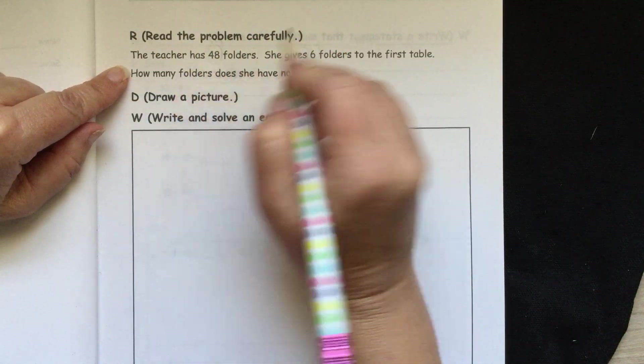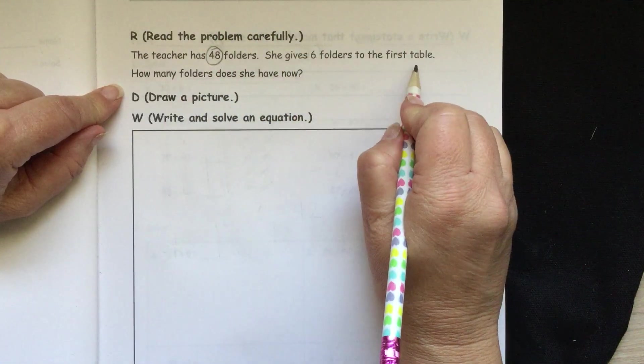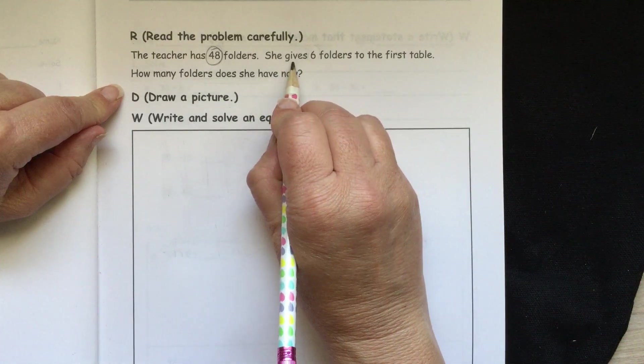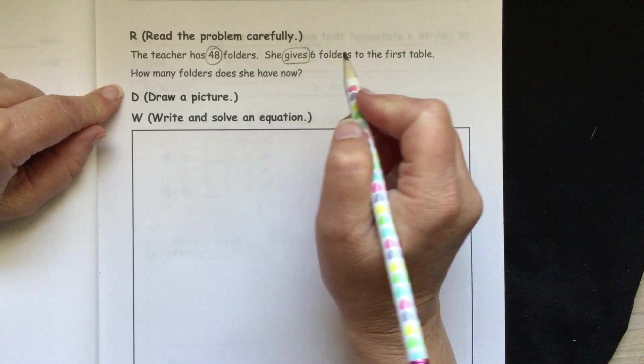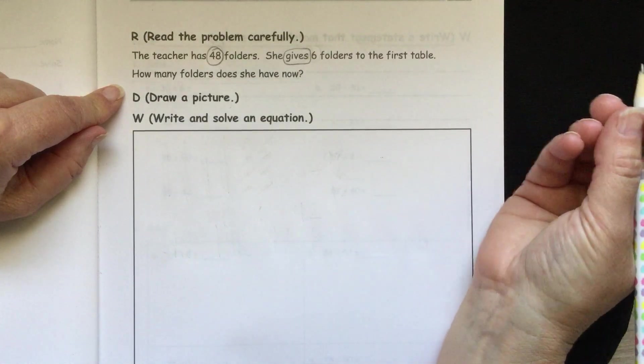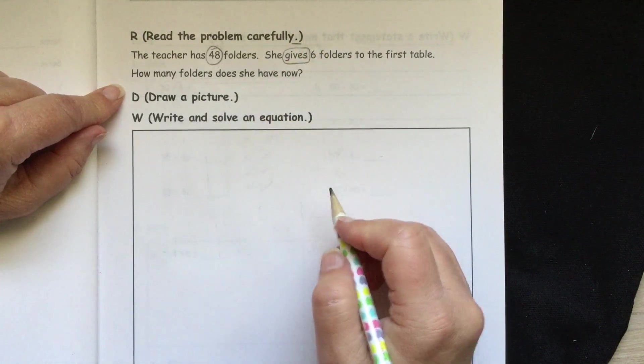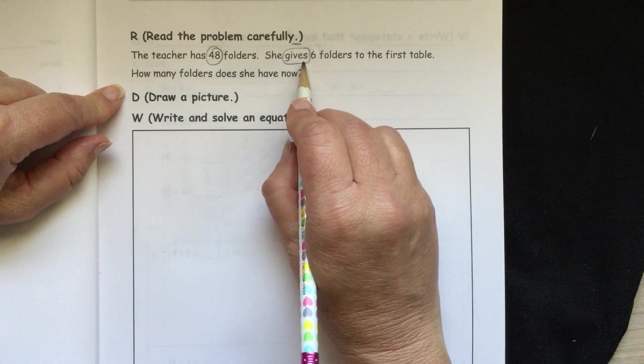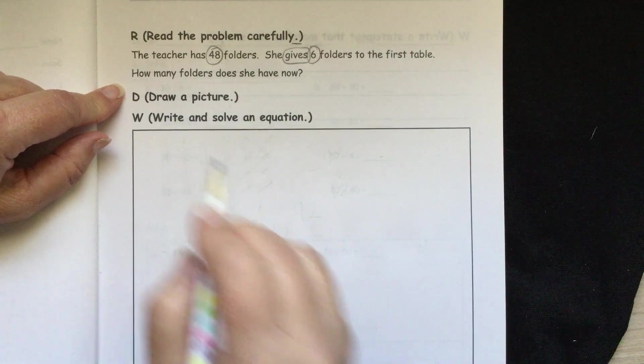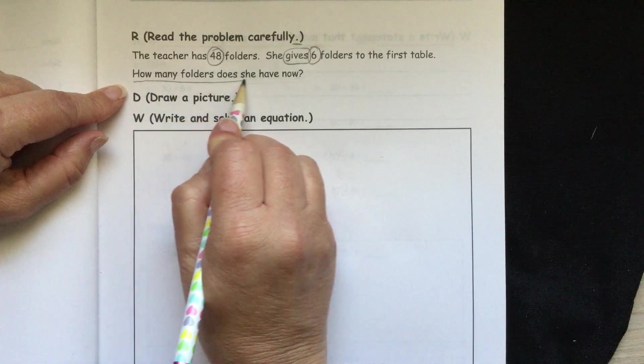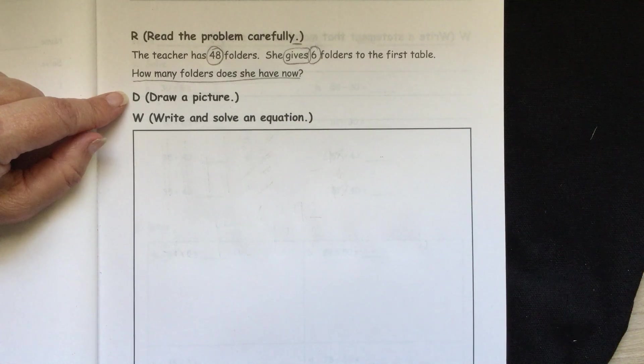The most important things that we need to remember as we're figuring this out. So the teacher has 48 folders. So let's circle 48. She gives 6 folders to the first table. If you're giving something away, it means you're going to have fewer of what you had to begin with. So that means we're going to subtract. So let's put a minus sign there. She's giving 6 folders. Then our question is, how many folders does she have now? Underline that to make sure we come back and answer that question.